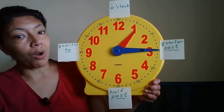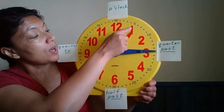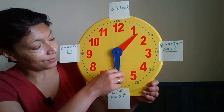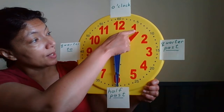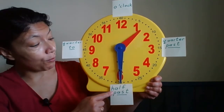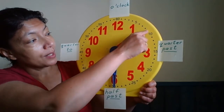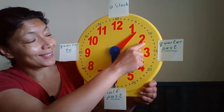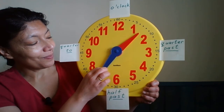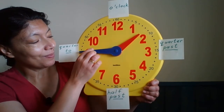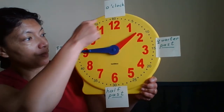It's quarter past one. It's half past one. Now the small hand is moving to the two. Can you see that? It's quarter to two.